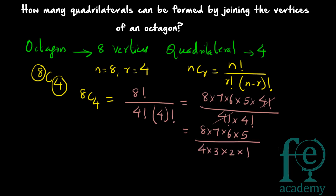So what you will be getting? Your answer will be: 3 into 2 is 6, and 4 into 2 is 8, so 7 into 5 into 2 gives you 70. So your answer will be 70 — 70 quadrilaterals can be formed by joining the vertices of an octagon. So here the order does not matter, it is a case of combination. There are 8 vertices and you are taking 4 at a time, so 8C4 — just apply the formula and you get 70.